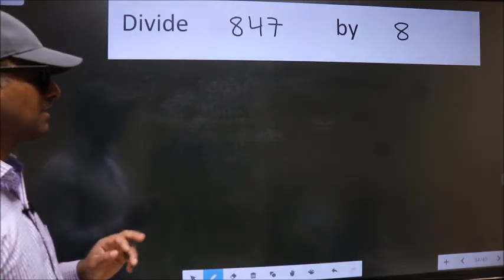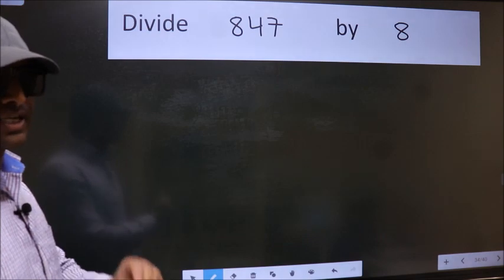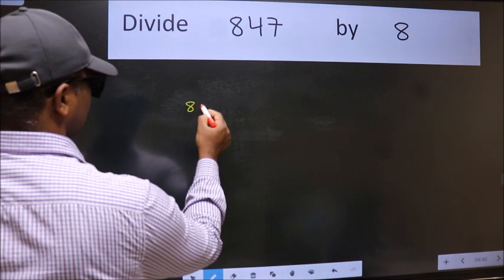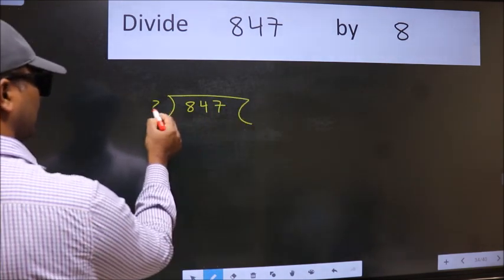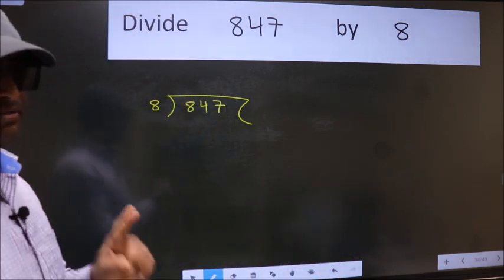Divide 847 by 8. To do this division, we should frame it in this way: 847 here, 8 here. This is your step 1.